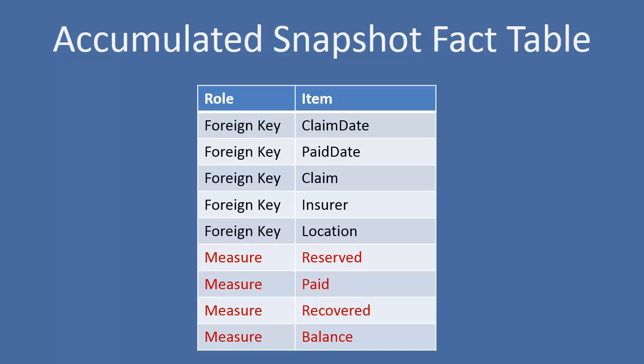You can see that we may not know the paid date at the time a claim is originated — and more than likely will not. Likewise, we won't know the paid amount. So across the life of this claim, this record will be updated. When the payment is made, the paid date will be updated to represent the actual date of payment. The same is true for the paid amount and the balance.